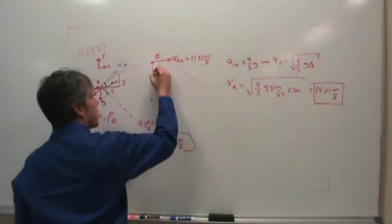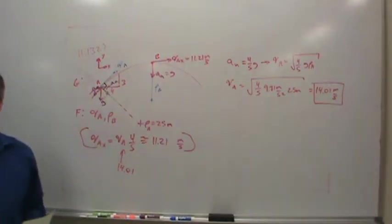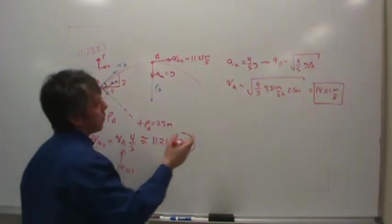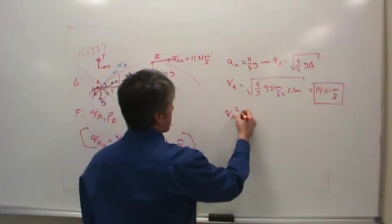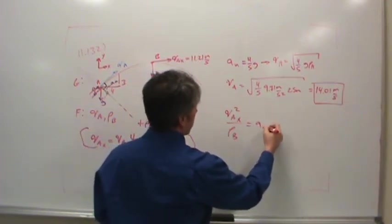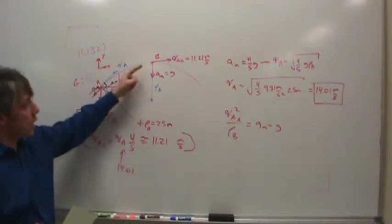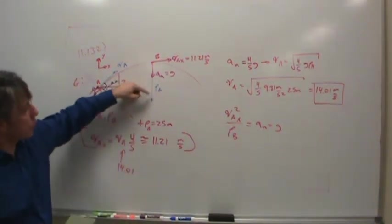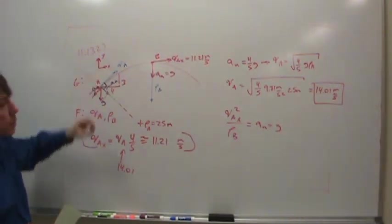The normal acceleration is just equal to g, right? It has to be, because it's at the top of the curve. So what do we do? Well, we do something very similar here. Basically, we just say that the velocity A x squared over rho B is equal to the normal acceleration, which is just g. Notice I'm not particularly concerned with the sign, because I'm really using more of a normal tangential coordinate system than a Cartesian coordinate system.